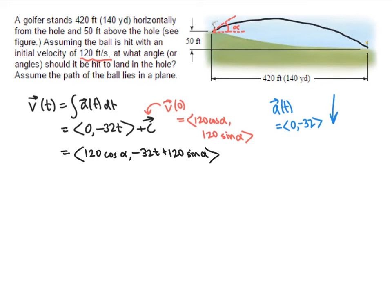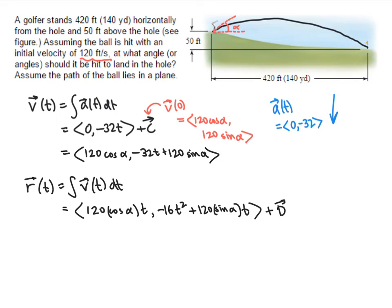Now we're going to integrate again to get the position vector. So r of t is going to be the integral of v of t. Take another antiderivative. Now we're integrating with respect to t, so the antiderivative of 120 cosine alpha is 120 cosine alpha t. Antiderivative of 32t is 16t squared, 120 sine alpha t, plus again some constant vector, which I'll call d.